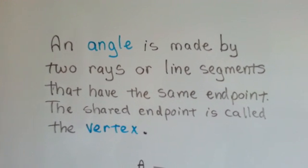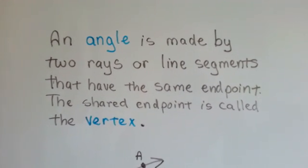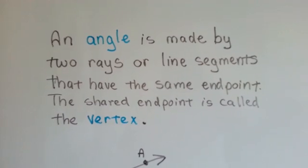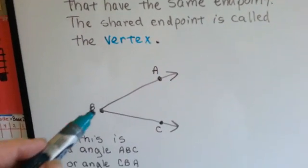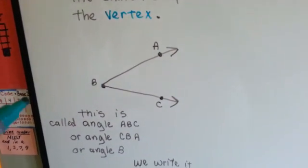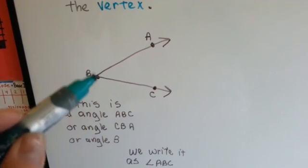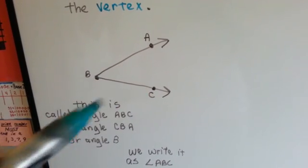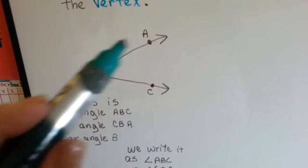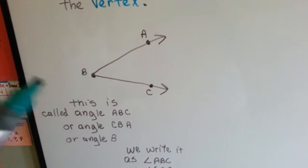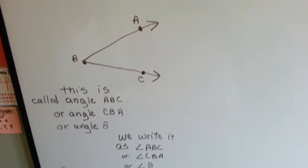An angle is made by two rays or line segments that have the same endpoint. The shared endpoint is called the vertex. This is the vertex right here. This is called angle ABC, or we can call it angle CBA, or we could just call it angle B by the name of the vertex.